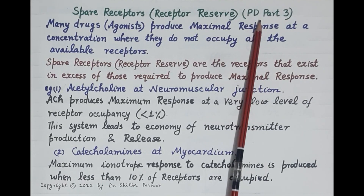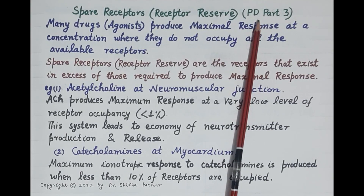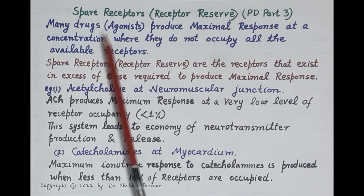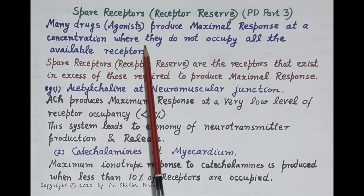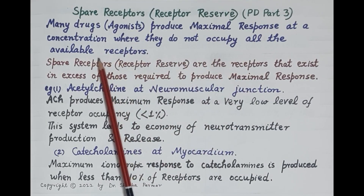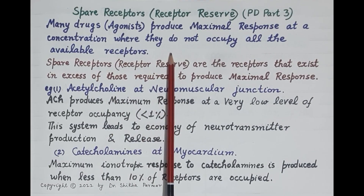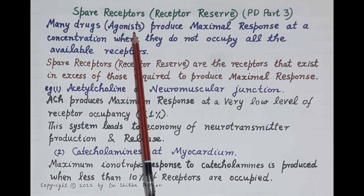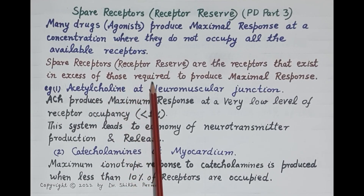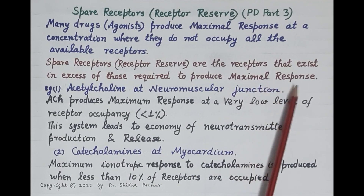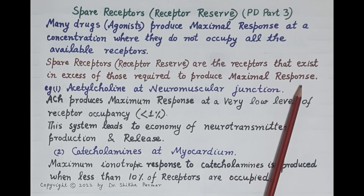As per our assumption, a drug should bind to all the available receptors so as to produce the maximal 100% response, where maximum response is a response which cannot be further increased by increasing the dose. However, many drugs produce maximal response at a concentration where they do not occupy all the available receptors. Such drugs are called agonists.